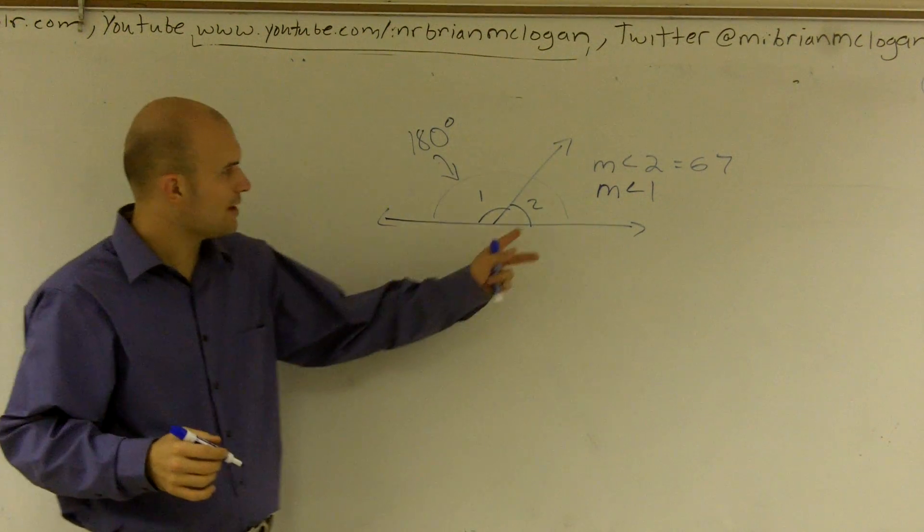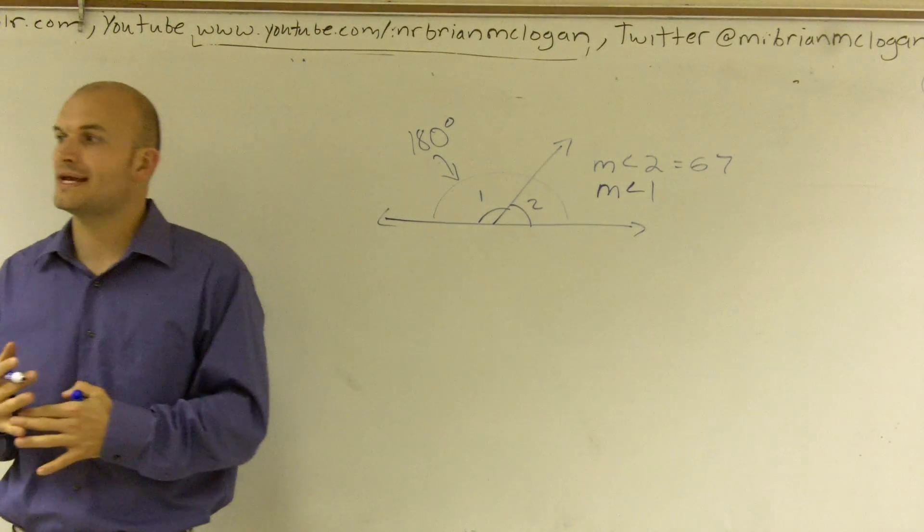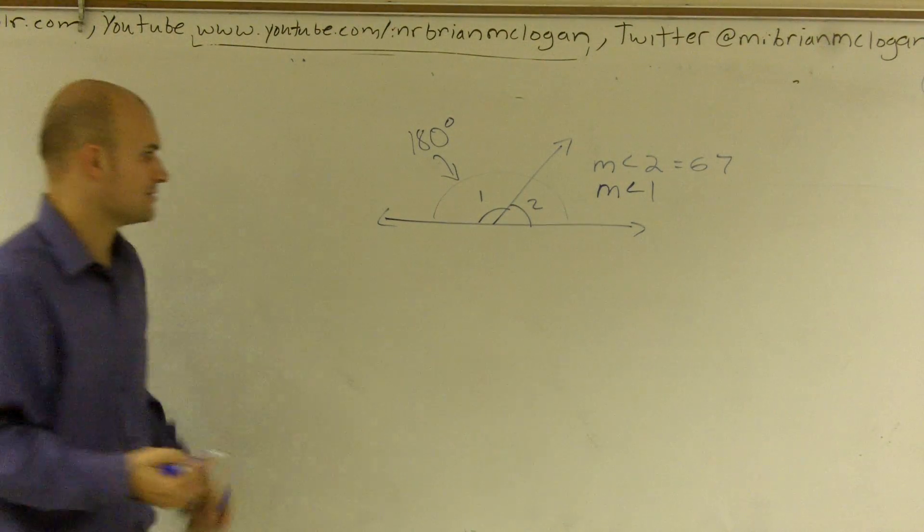So therefore, if I know that one of my angles is 67 degrees, I can subtract that from 180 to get the other half of my angle.